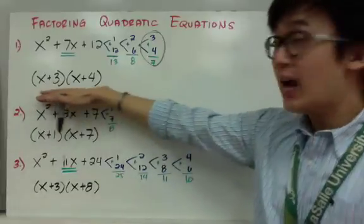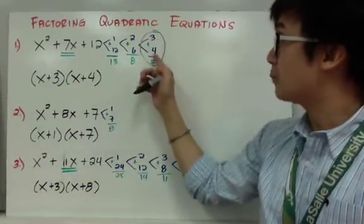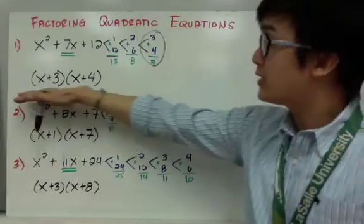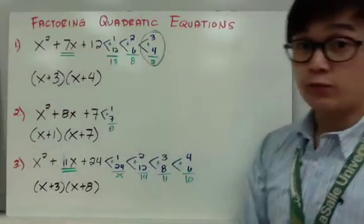So to write your factor, it's just x plus 3 times x plus 4. This is how you factor a quadratic equation of this form.